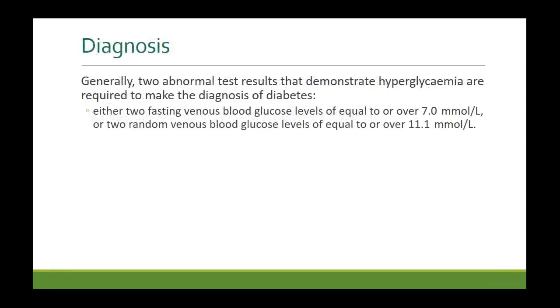How do you diagnose diabetes? Generally, two abnormal test results that demonstrate hyperglycemia are required to make the diagnosis.